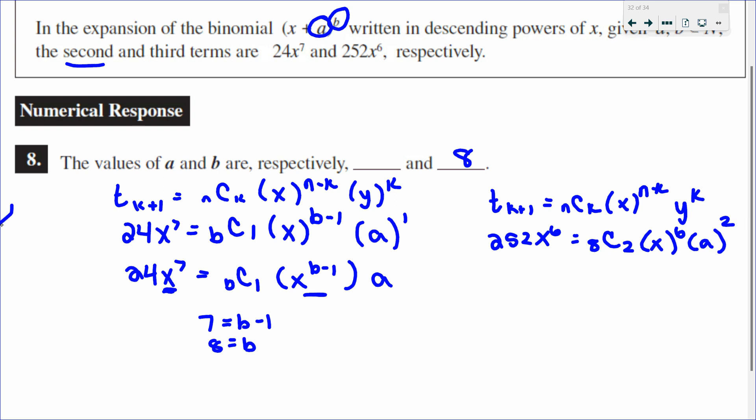Looking at this, I'm going to do on my calculator 8C2. I know 8C2 is 28. This is x^6, and a^2. My x is balanced out. So I have 252 = 28a^2. Divide both sides by 28, and I get 9 = a^2. Take the square root, and a is plus or minus 3.